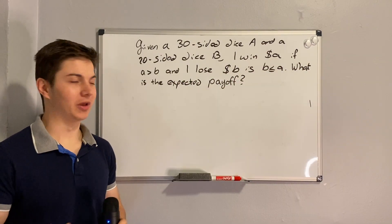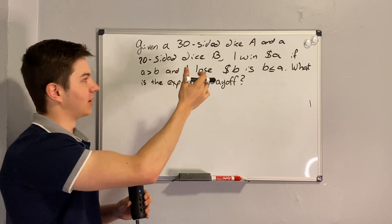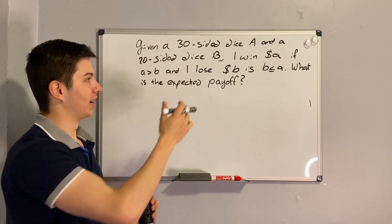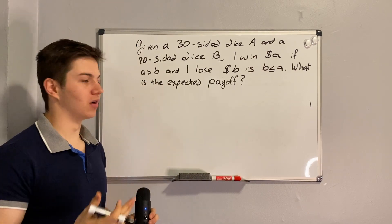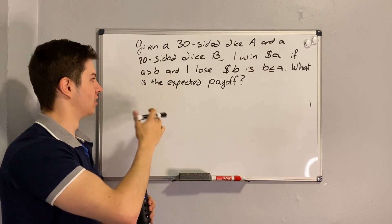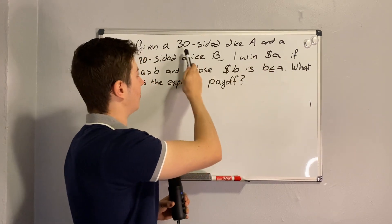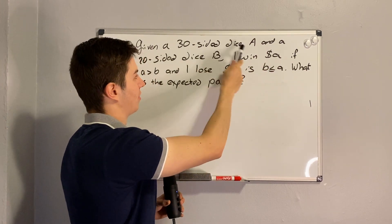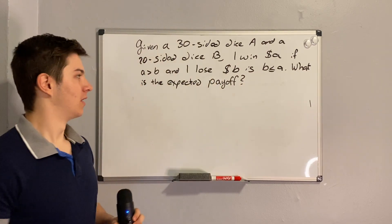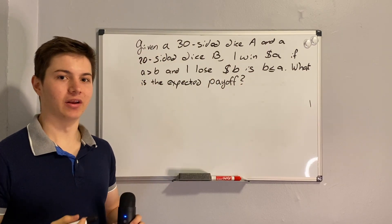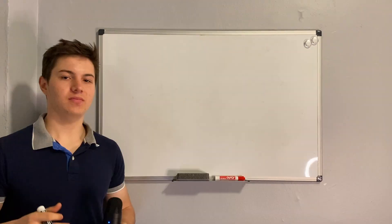In this video we'll be answering this question: I have a 30-sided dice A and a 20-sided dice B. I win A dollars if A is greater than B, and I lose B dollars if B is greater than or equal to A. A dollars is the number rolled with dice A, and B dollars is the number rolled with dice B. Have a think about it and I'll be right back with the solution.